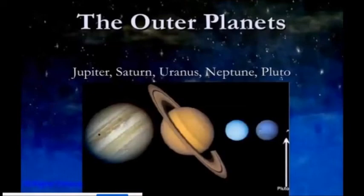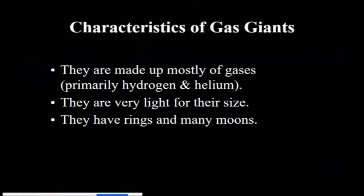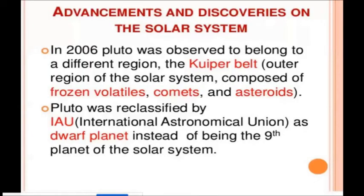But the outer planet, the Jupiter, Saturn, Uranus and the Neptune, they are made mostly of gases, primary hydrogen and helium. They are very light for their size. They have rings and many moons.